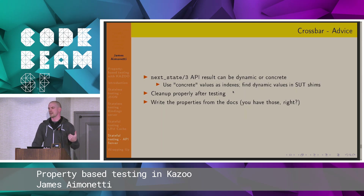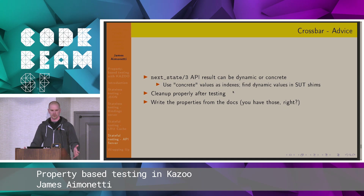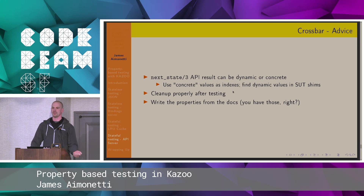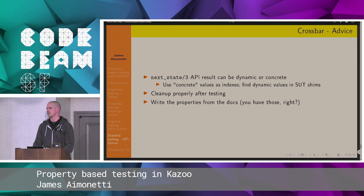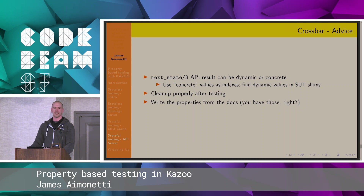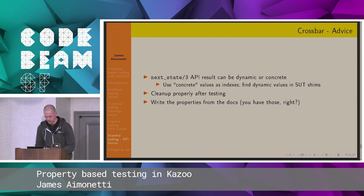Some advice: I always get tripped up on next_state with the API result being symbolic versus the concrete value from the system. Make it as clear as possible that you can't rely on this being the actual result. One of the things we do is reference the account name and then do a look-up in the shim for the API command to use the actual account ID. Writing properties from the docs — that's how I caught the regression in the dedicated IPs. I didn't trust the code; I went to the docs and did what the docs said to do, because that's what our users do, and that's how we found the regression.